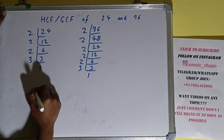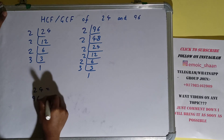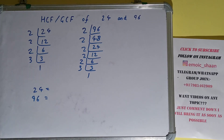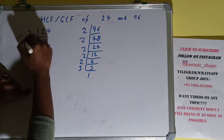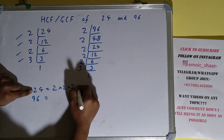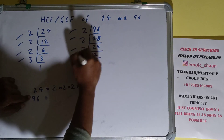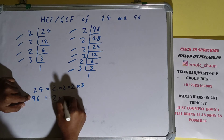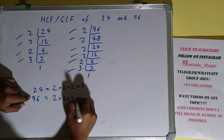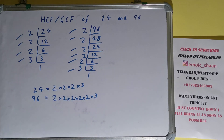The next thing we need to do is write down each of the numbers with their respective prime factors. For 24, the prime factors we have are 2 × 2 × 2 × 3. For 96, the prime factors we have are 2 × 2 × 2 × 2 × 2 × 3.